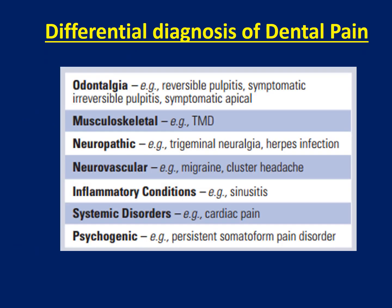Differential diagnosis of dental pain. There are many sources of pain. First, odontalgia, which is of dental origin — it may be reversible pulpitis, irreversible pulpitis, or symptomatic apical periodontitis.